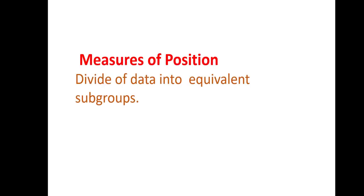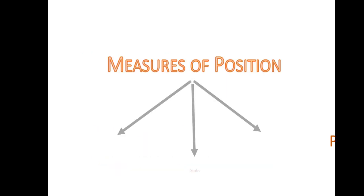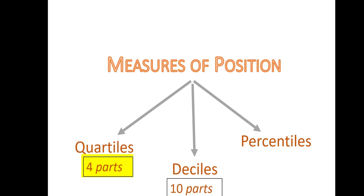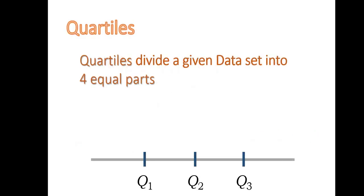Next we'll be talking about measures of position, which involves dividing our data into equivalent subgroups — in this case ungrouped data collected in raw form. For the measures of position we can talk about quartiles, which involves cutting our data into four equal parts; deciles, which involves cutting into 10 parts; and percentiles, which involves cutting into approximately 100 parts.